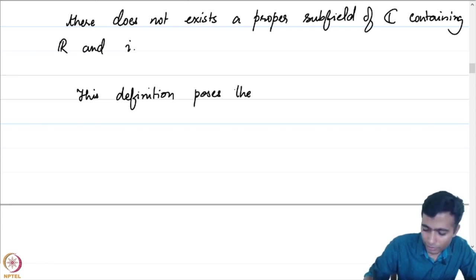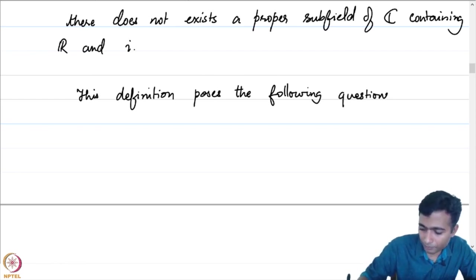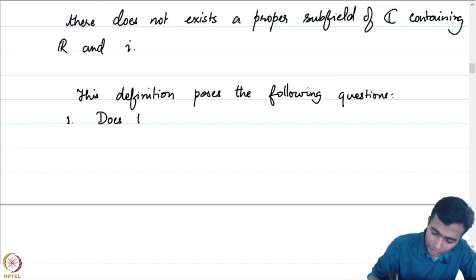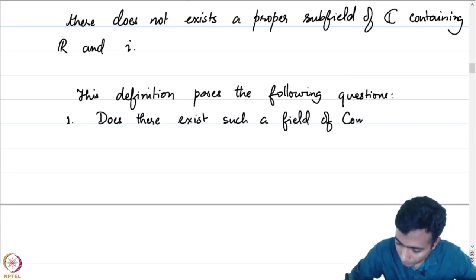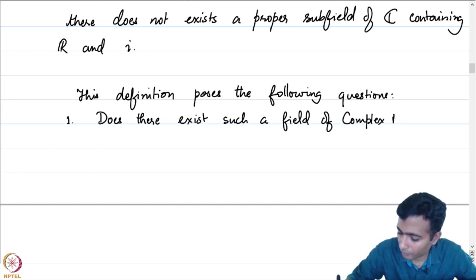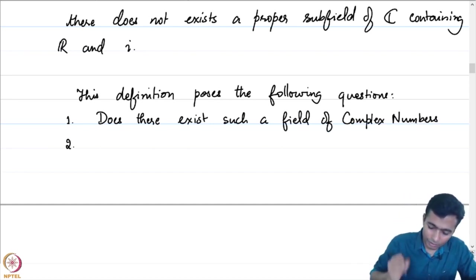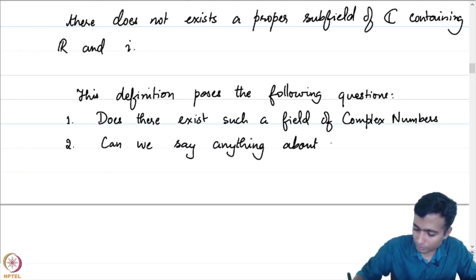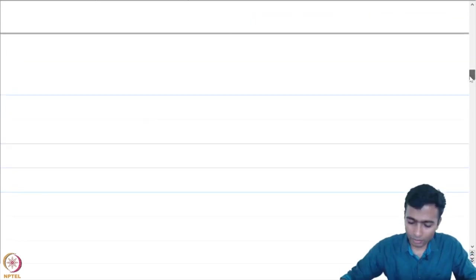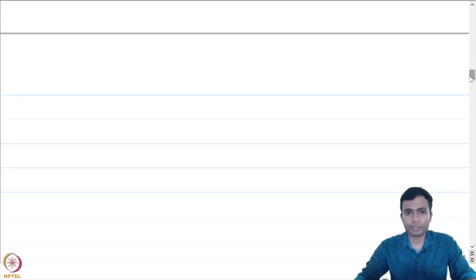This definition poses the following questions: first, does there exist such a field of complex numbers? We might want it, but we need to guarantee that it exists. And second, can we say anything about uniqueness? The rest of the lecture will be attempting to answer these two questions.